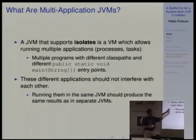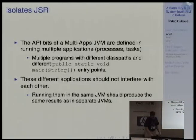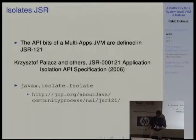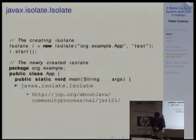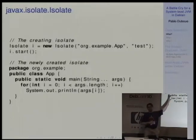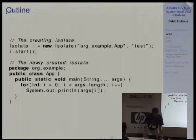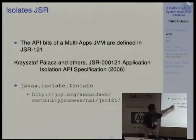I came across the concept of isolates when I was following a project called Jnode, that was trying to build a whole Java operating system. The interesting thing about isolates is that they are a standard — JSR 121, the Application Isolation API — you can go to the JCP.org website and download it. It's a very small JSR. You can say you want a new isolate running a given application, start it, and these few lines of code are equivalent to doing a new process launching an external JVM. This has been around since 2006.